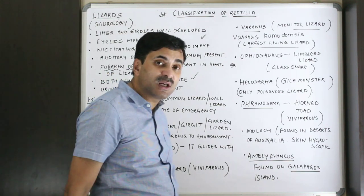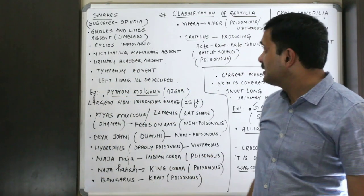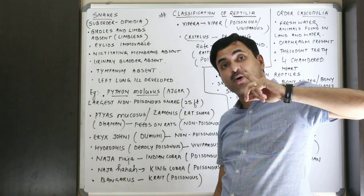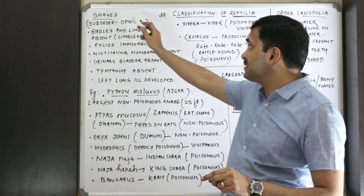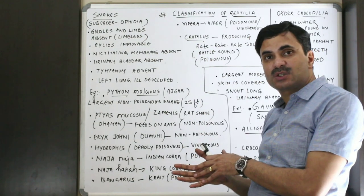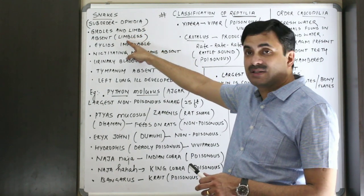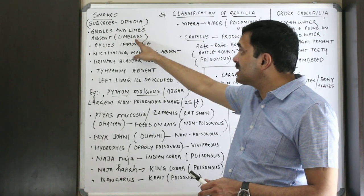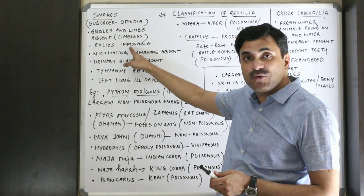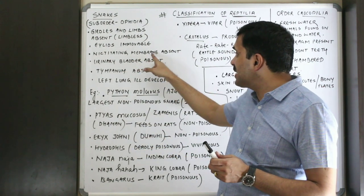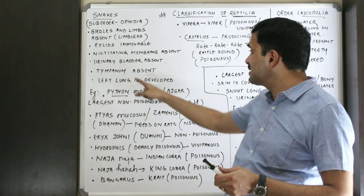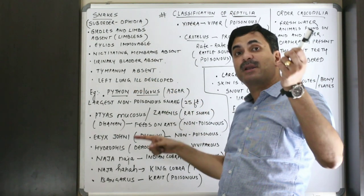Now coming to snakes, which belong to suborder Ophidia, while lizards belong to suborder Sauria — both under Order Squamata. Snakes have characters opposite to those of lizards: girdles and limbs are absent; eyelids are immovable; nictitating membrane is absent; tympanum is absent so they cannot hear; urinary bladder is absent. In lizards both lungs are equal, but in snakes only the right lung is well developed.